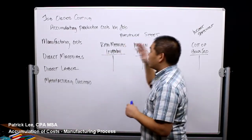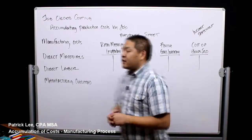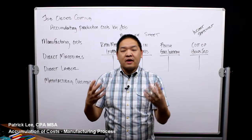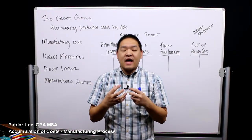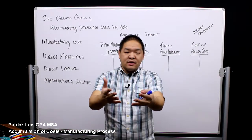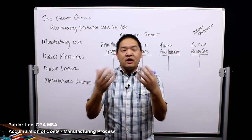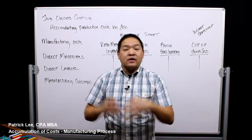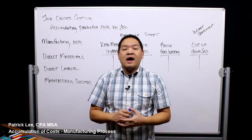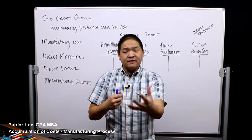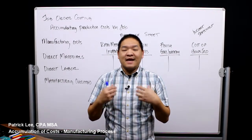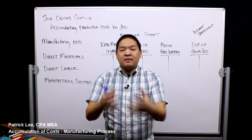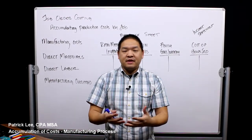Job order costing accumulates production cost by job. For instance, if I was a mechanic and you came to me for an oil change, I as the owner am going to have to keep track of how much that job is going to cost me. You come for an oil change and you're going to need five quarts of oil and an oil filter. A quart of oil is two dollars, so five quarts costs me ten dollars to put new oil in your car.